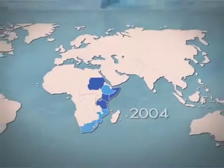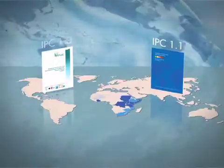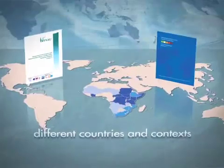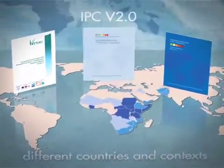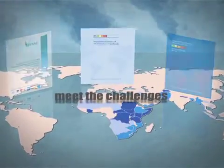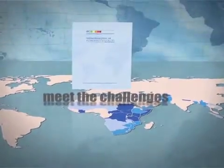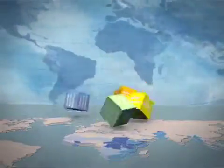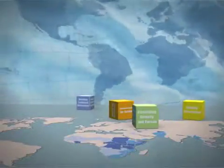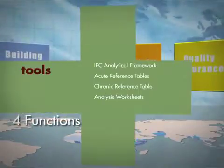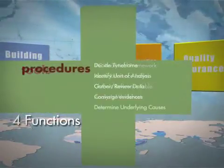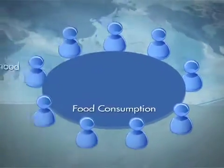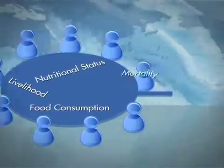The IPC version 1.0 and 1.1 have been extensively applied and used in different countries and contexts. Building on this experience, the new version 2.0 aims to meet new challenges emerging from field applications, to consolidate perspectives from leading food security organizations, and to update and innovate the IPC approach through clear and standardized functions consisting of new tools and new procedures. These new functions guide the work of IPC analysts from the beginning to the end of their work.